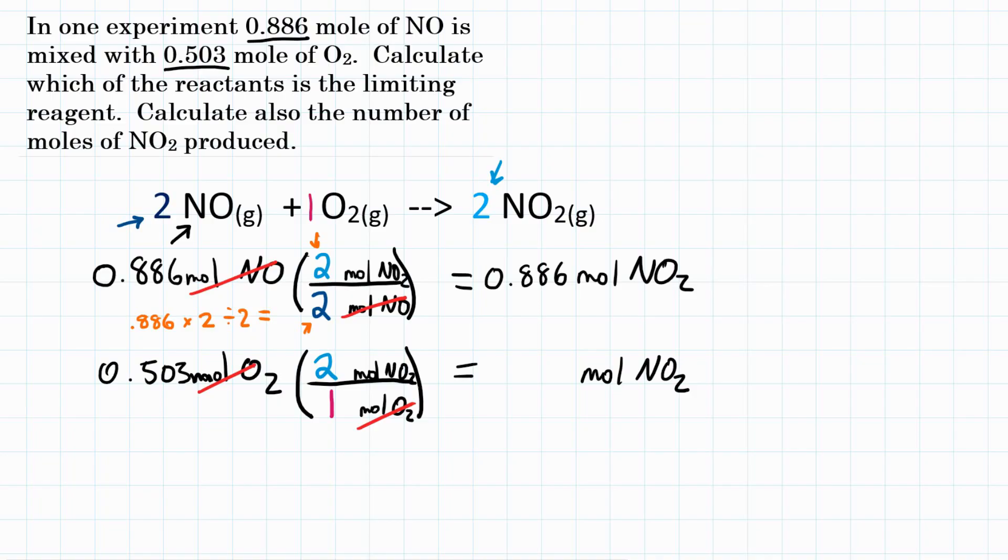However, we have to solve for our oxygen how much it would produce of NO2 to see which one is less. So we have to do that math, too. So in our calculator down here, we'd put 0.503 times the top of our conversion factor, 2, divided by the bottom, which is 1, which we could skip if we wanted to. It's not going to change it. Hit equals, and we will get right about 1.01, or about 1.006. So we'll round to about 1.01. So we solved both of these equations.